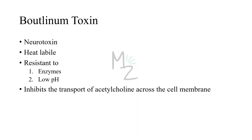Now let's talk about the toxin before discussing pathogenesis, as it plays a major role in botulism. This toxin is a neurotoxin that is heat labile but resistant to enzymes and low pH. It inhibits the transport of acetylcholine across the cell membrane by acting as a protease that cleaves the proteins involved in acetylcholine release. This toxin is a polypeptide encoded by a lysogenic phage. Along with tetanus toxin, it is among the most toxic substances known.